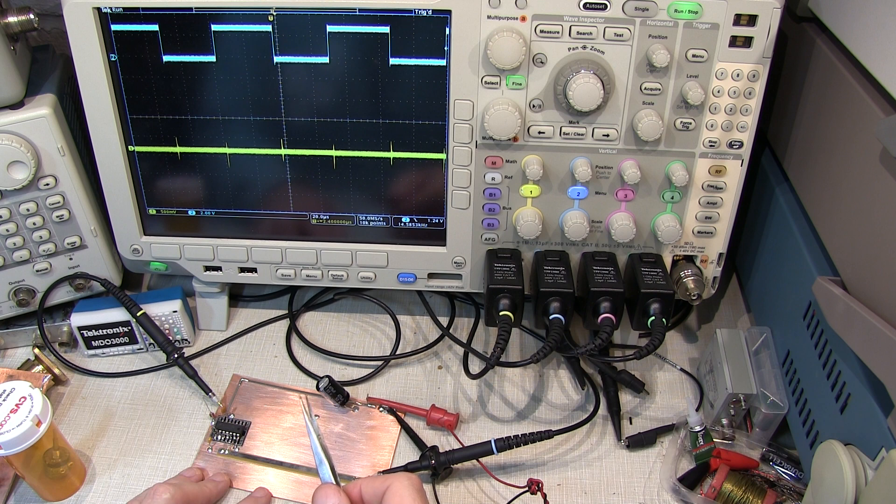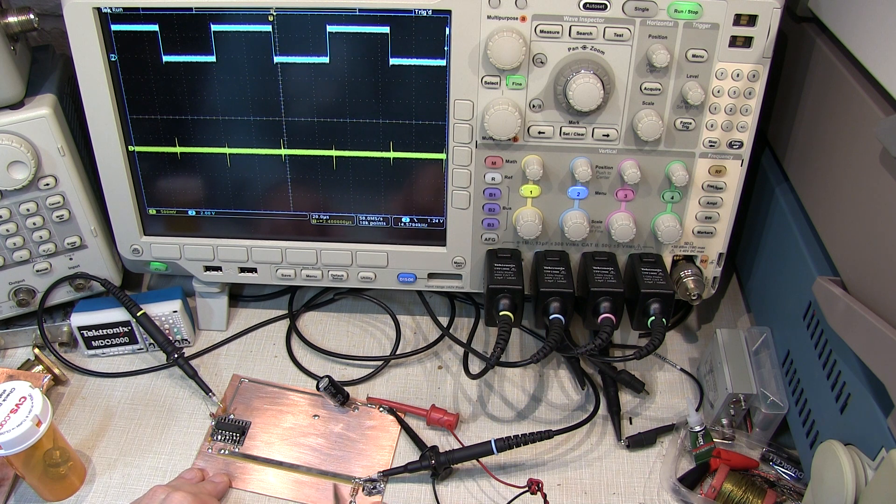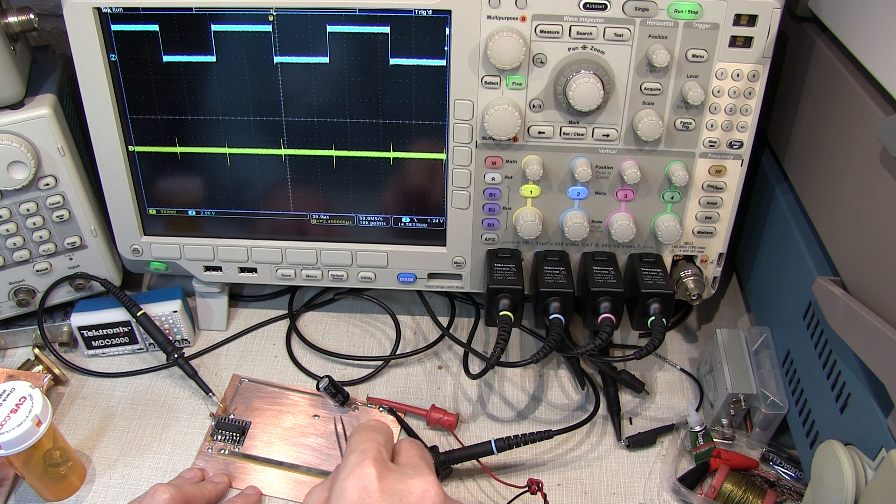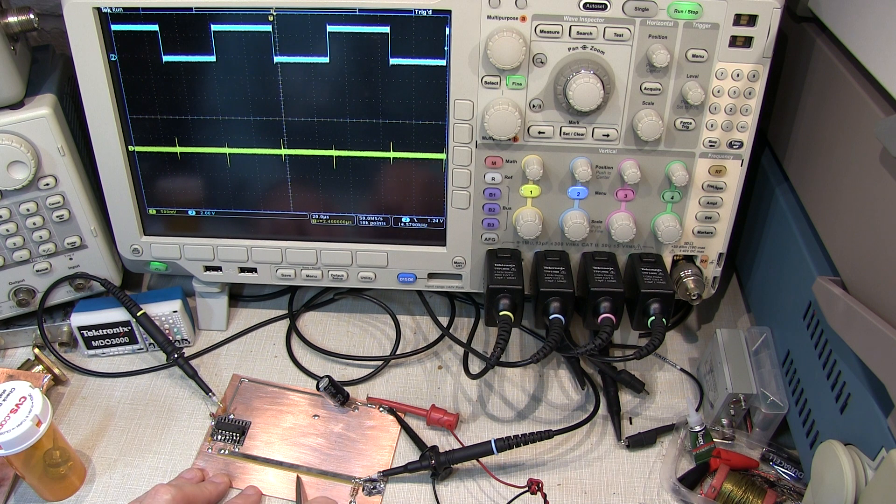But remember we're talking about the high frequency currents here and we want to minimize loop area. And that means that the high frequency currents are actually going to go into the ground plane and follow a path underneath the transmission line because that will represent the least amount of loop area. It's not going to just go straight across this board because that means that the current would have a big loop and a lot of inductance. So the high frequency currents are going to follow a path underneath the transmission line back towards the chip.